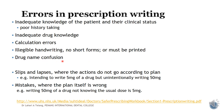Slips and lapses occur where actions do not go according to plan — for example, intending to write 5 milligrams but unintentionally writing 50, which is a terrible mistake. Mistakes where the plan itself goes wrong include writing 50 milligrams not knowing it should actually be 5 milligrams. This confuses the person dispensing the drug. It's important to have a good pharmacist who can actually correct you or call back to query whether the dosage written was intentional. That's why it's important to counter-check your prescription when writing.